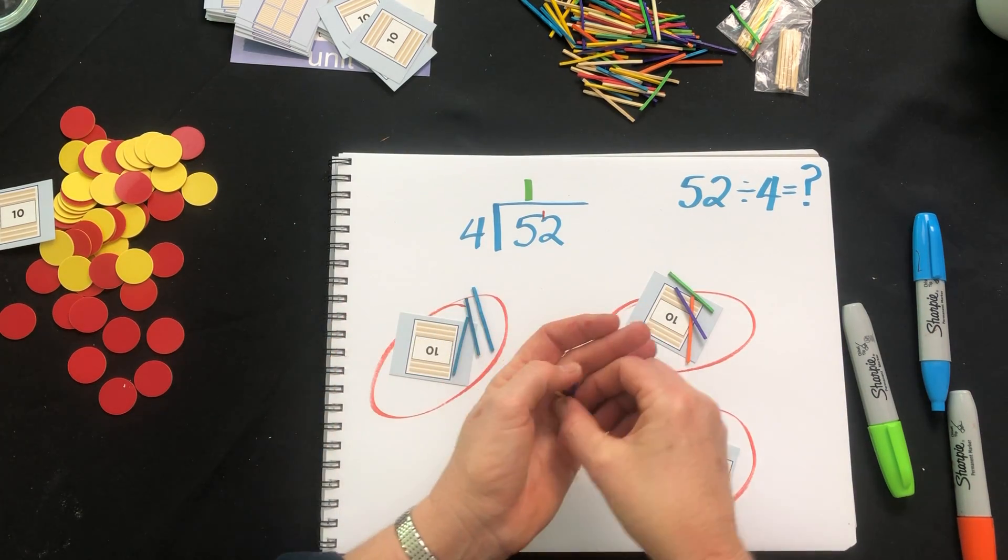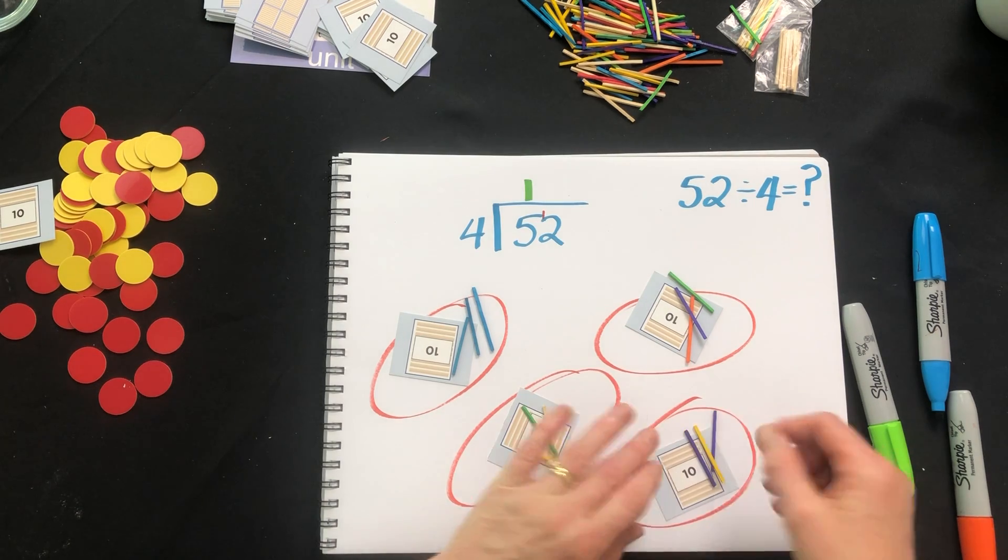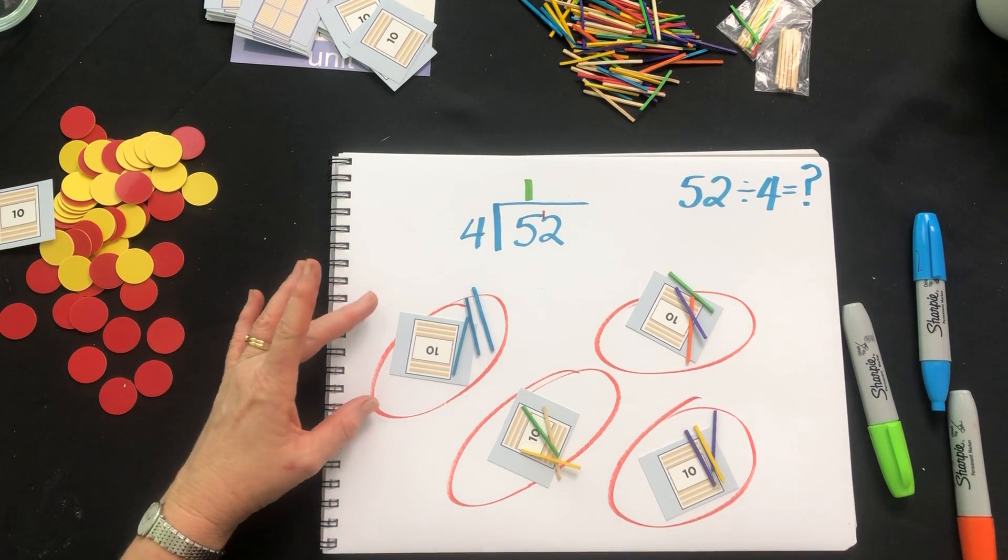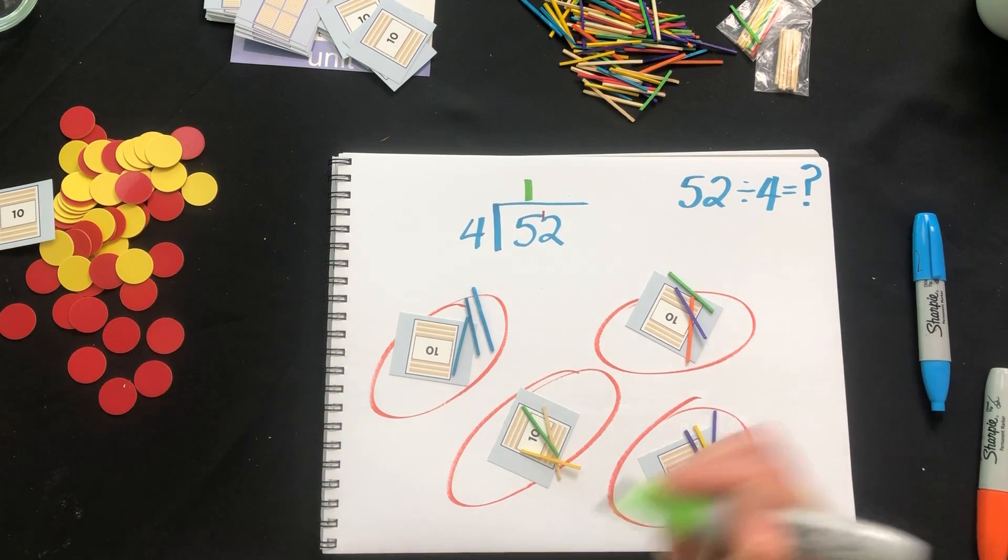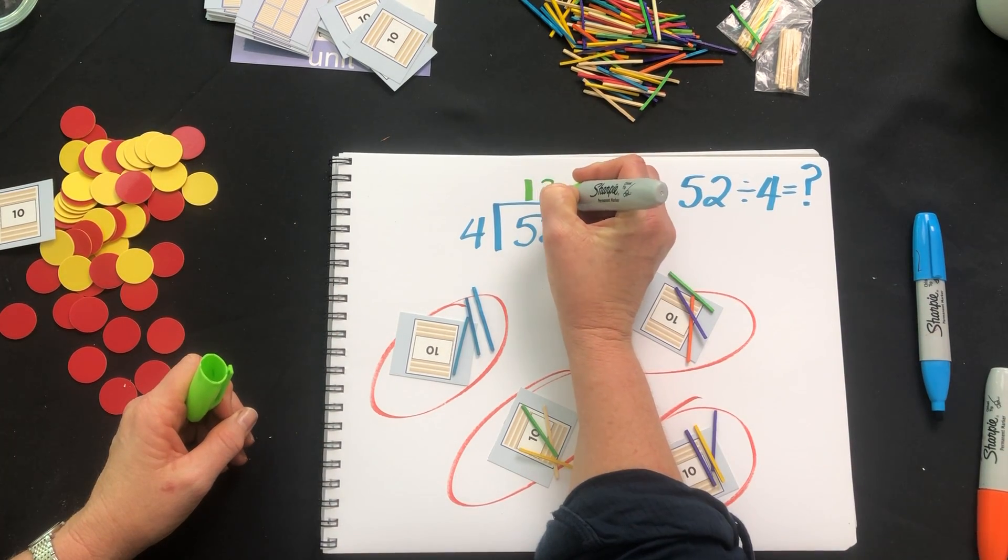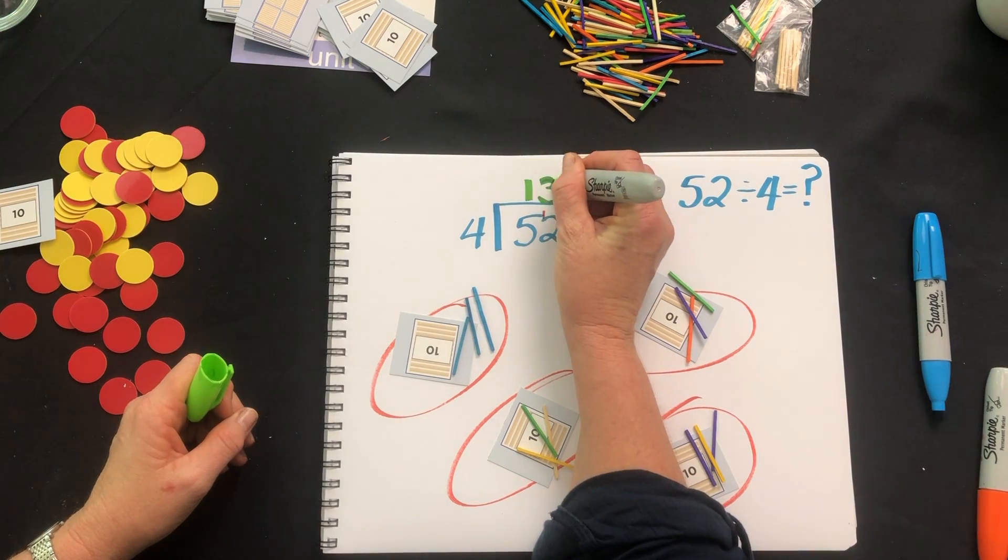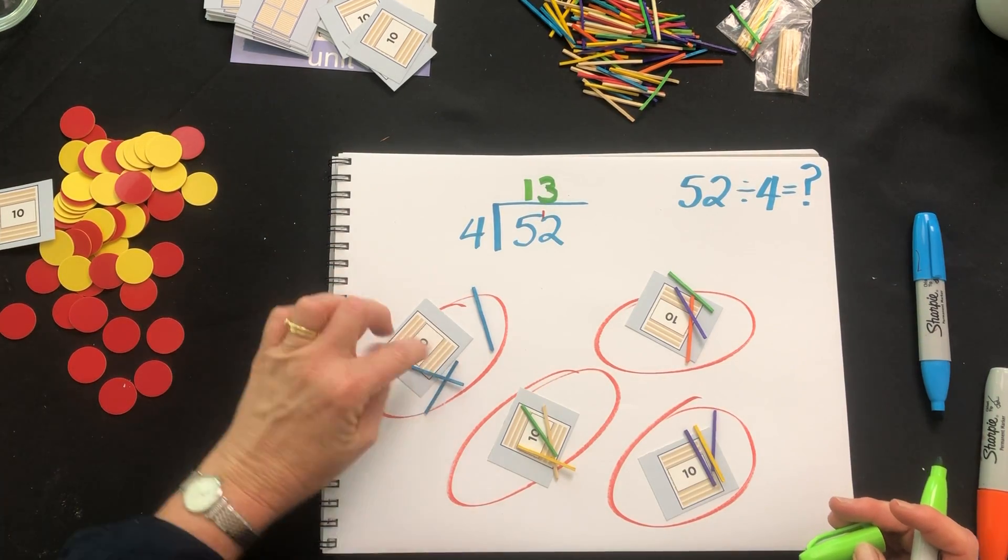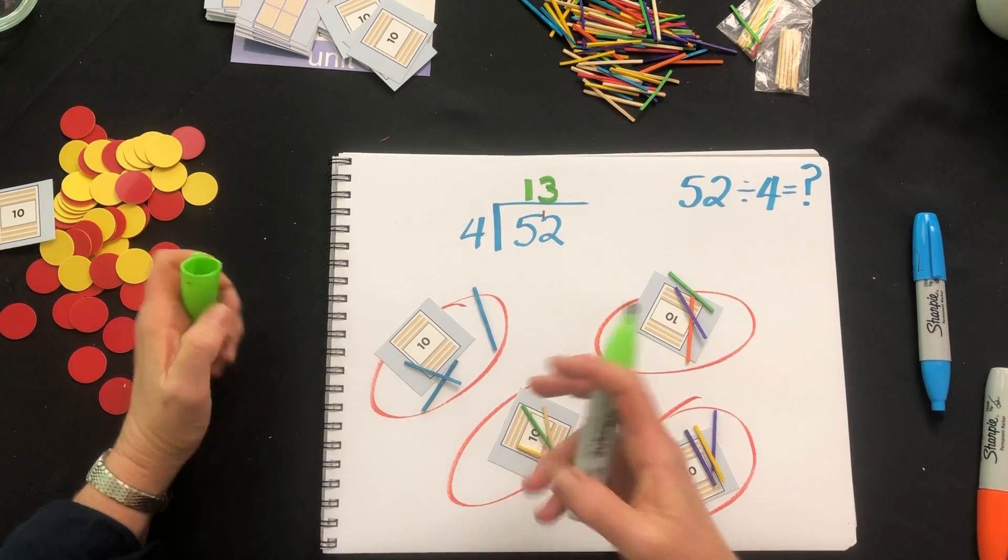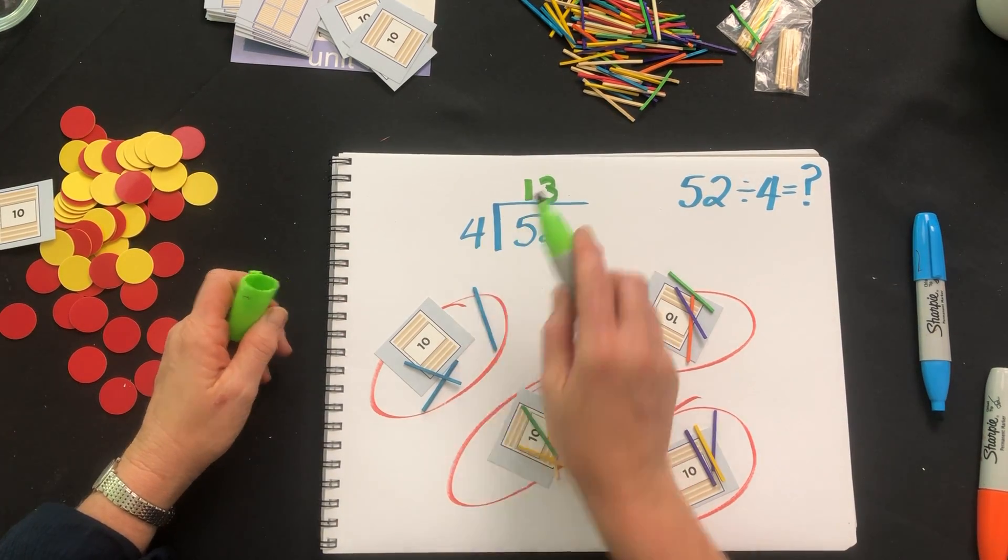We could do it one at a time if that's required but hopefully they're building up their understanding of their times tables as we go. And now we can see that there are three ones in each group. If we go back and check we can see that each group has 13 and 52 divided by four was 13.